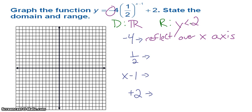That 1/2 in that b position tells me I have a decay. The x-1 in my exponent tells me I have shifted to the right 1. Because remember, it's the opposite of what you might think it might be.